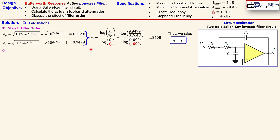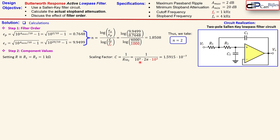We set R1 equal to R2, defining both as R = 1 kΩ. The next step is calculating the scaling factor C, given by 1/(R × ω_c), where ω_c = 2π times the cutoff frequency. With R = 1000 Ω and f_c = 1000 Hz, the scaling factor C is approximately 1.59 × 10⁻⁷.